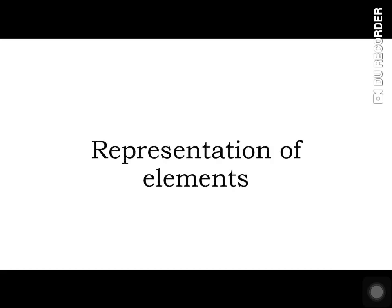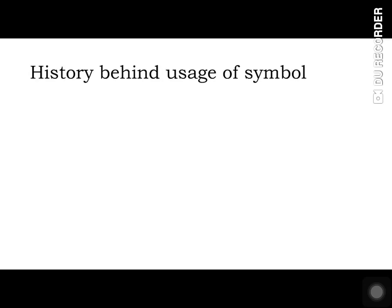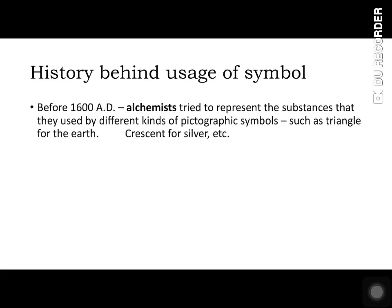Hello students, today we are going to study about the representation of elements. We are going through a brief idea of the history behind the usage of symbols. Before 1600 AD, alchemists tried to represent substances using different kinds of pictographic symbols, such as a triangle for earth and a crescent for silver.